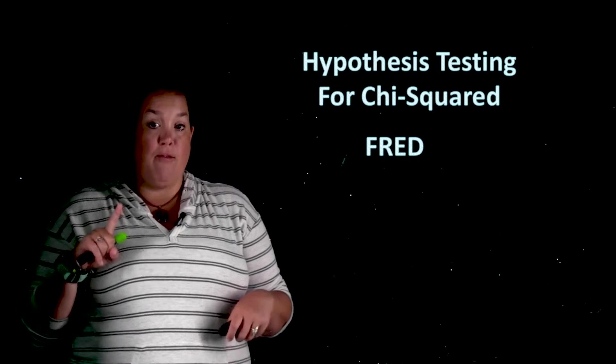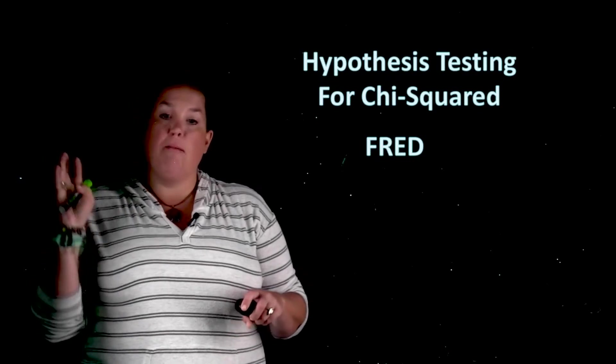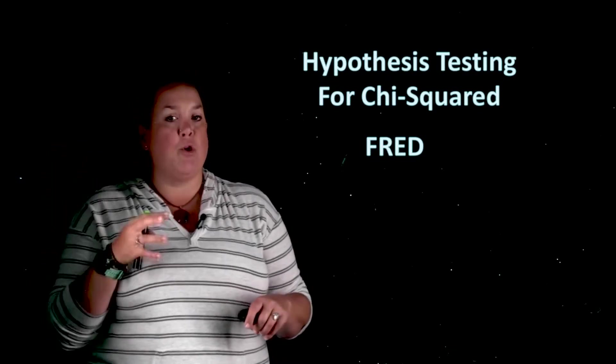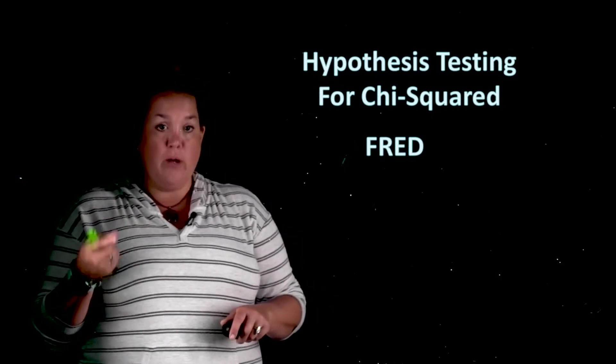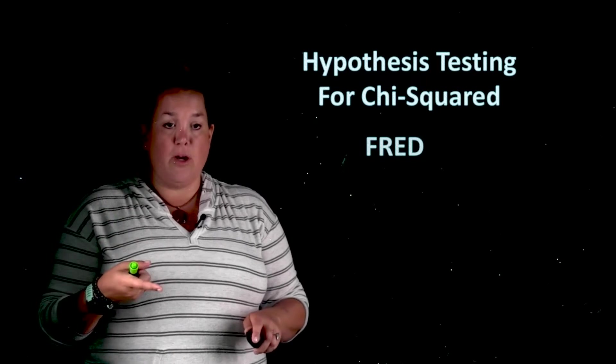Now, we're still going to be using that FRED method, and we're going to be using that because it creates some consistency. We can remember to do everything. It's kind of our checklist for doing things right. So in that FRED, with the hypothesis test for chi-squared, the first thing we have is formulating the problem.